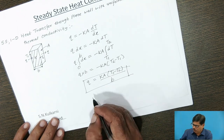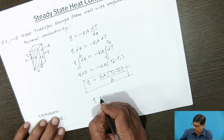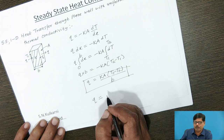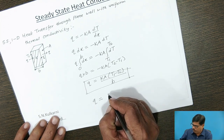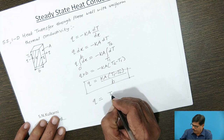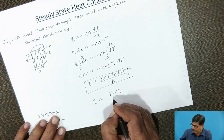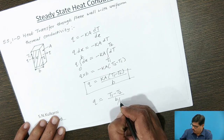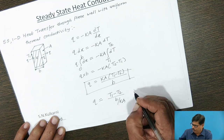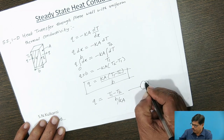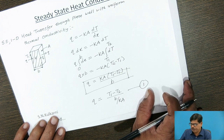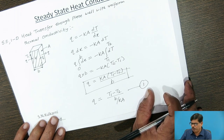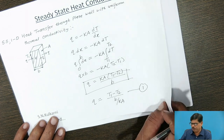We will call this Equation 1. This is the equation for steady-state one-dimensional heat transfer through a plane wall with uniform thermal conductivity without heat generation.